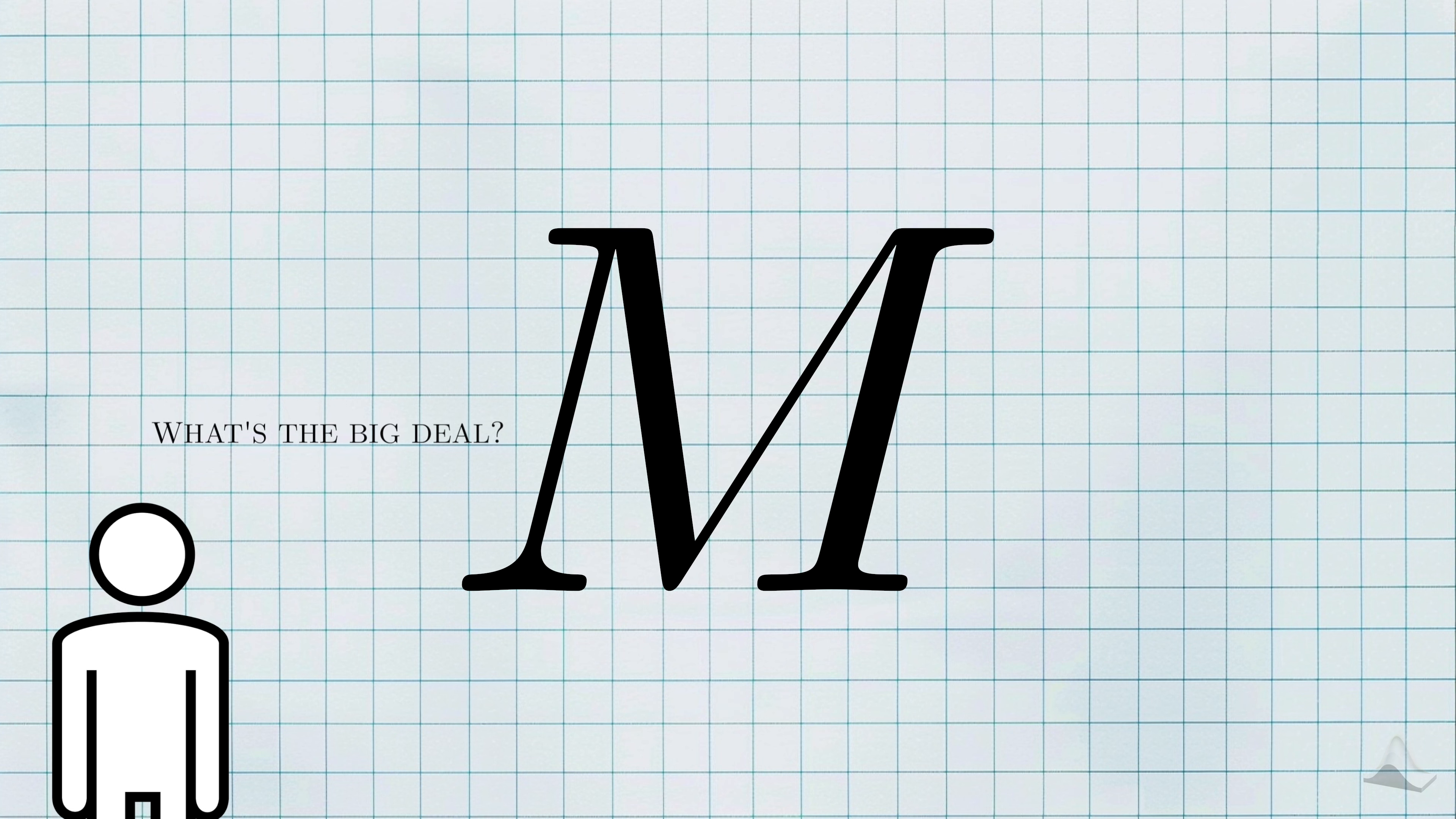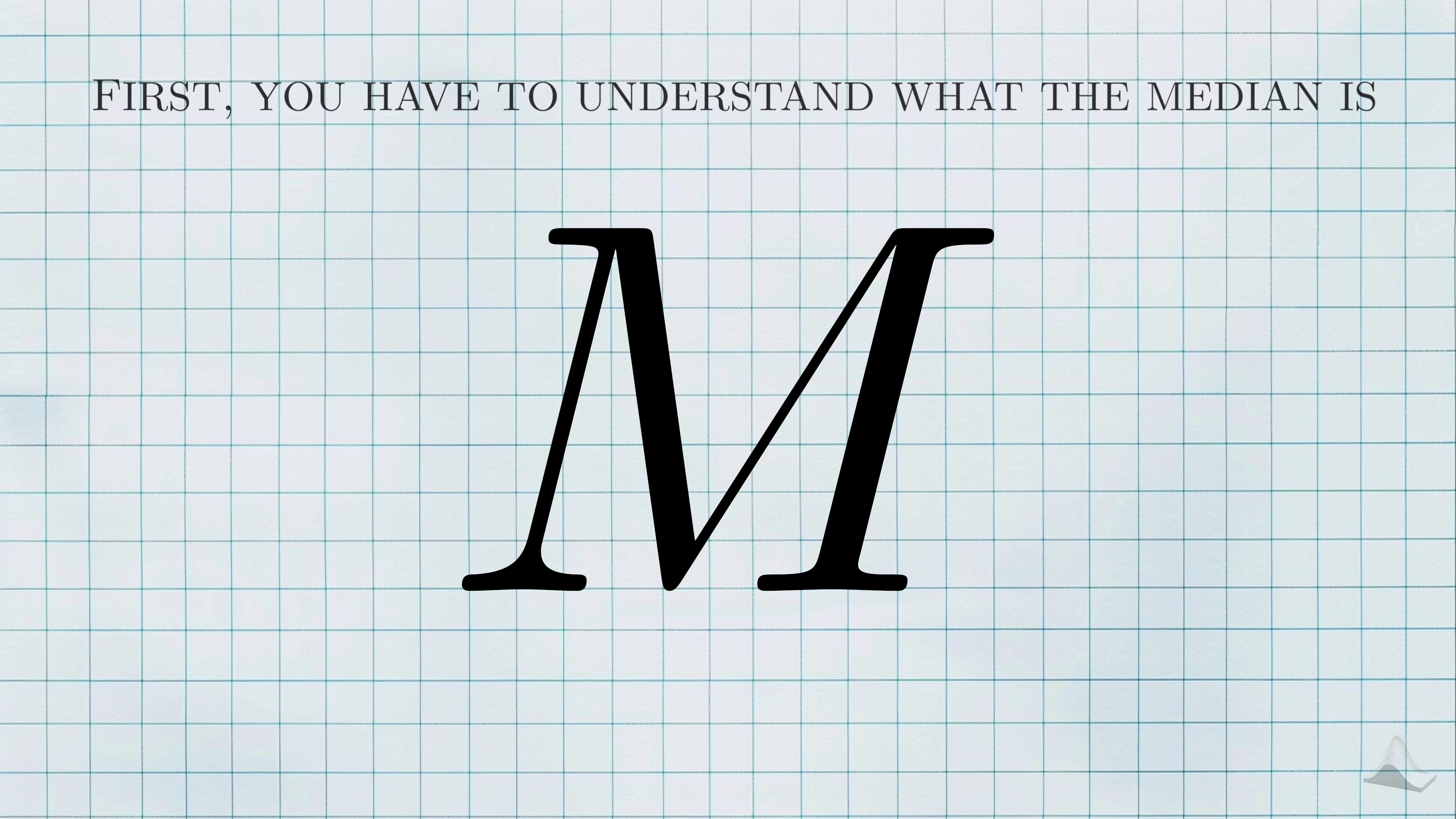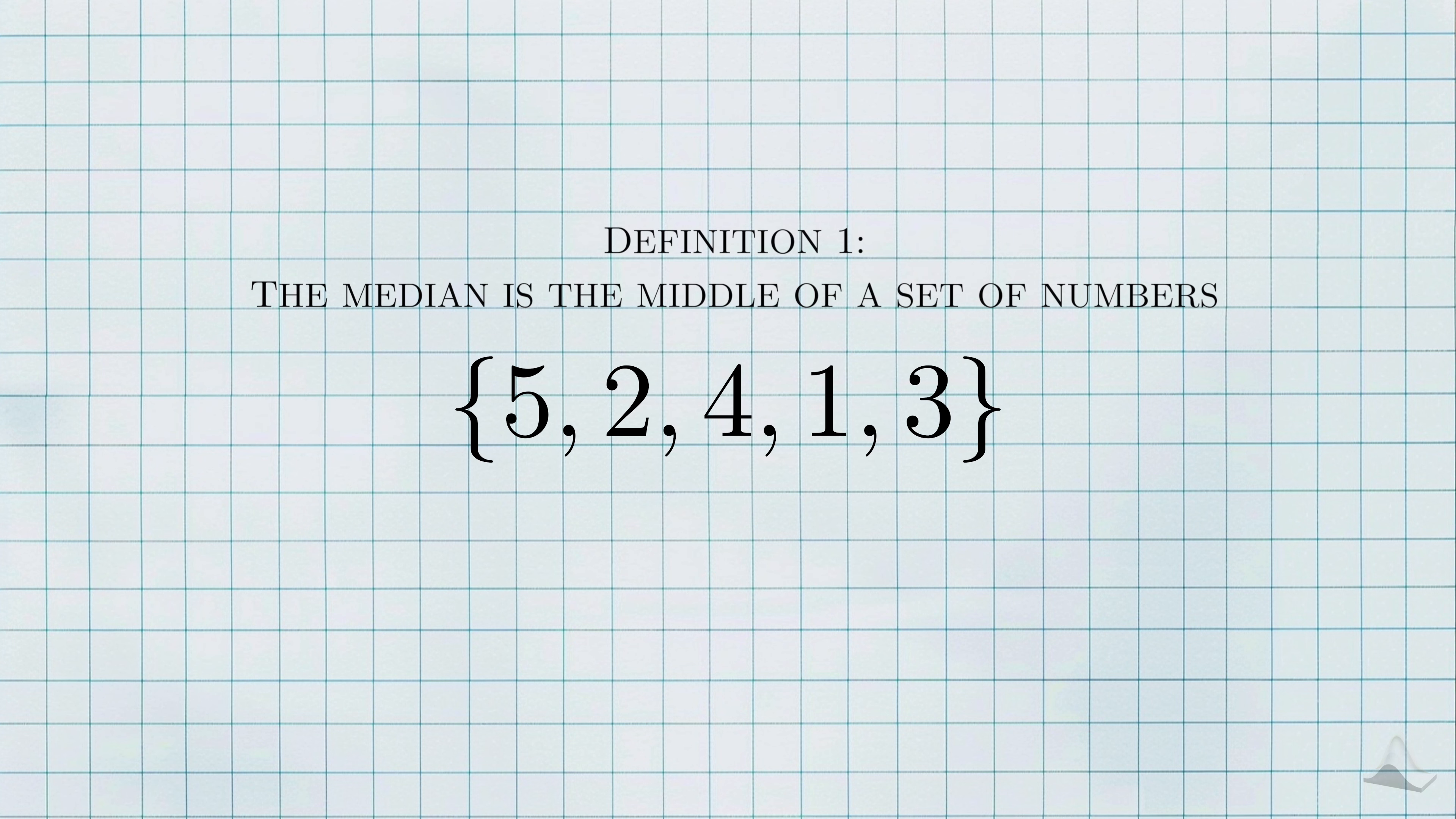If you know the sampling distribution, you can construct hypothesis tests, p-values, and confidence intervals for it. To some of you, the median might not be so different from the mean. So what could possibly make it that hard for a graduate student?